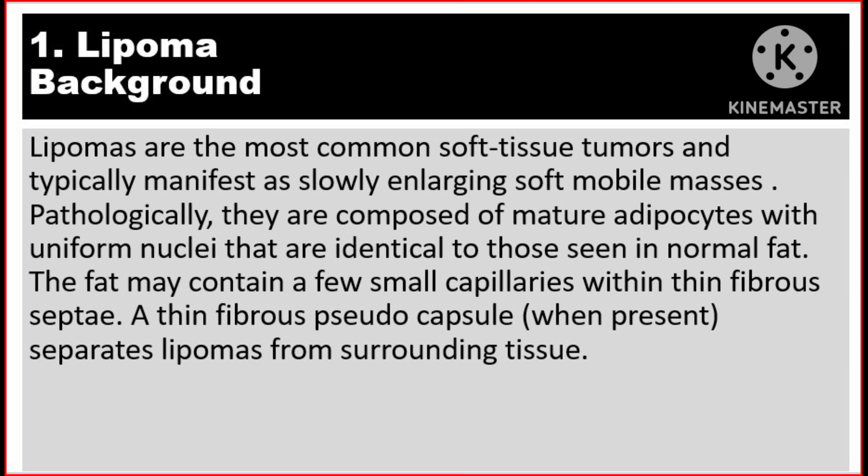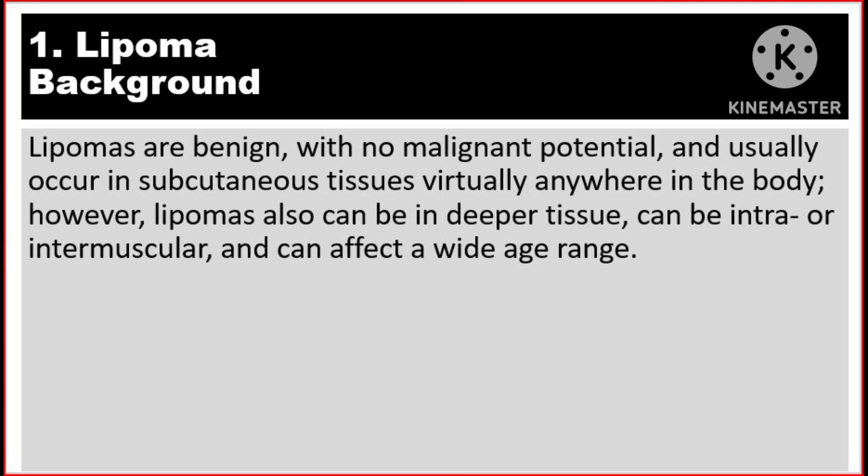Lipoma background. Lipomas are the most common soft tissue tumors and typically manifest as slowly enlarging soft mobile masses. Histologically, they are composed of mature adipocytes with uniform nuclei that are identical to those seen in normal fat. The fat may contain a few small capillaries within thin fibrous septa. A thin fibrous pseudocapsule, when present, separates lipomas from surrounding tissues. Lipomas are benign with no malignant potential and usually occur in subcutaneous tissues virtually anywhere in the body. However, lipomas can also be in deeper tissue, can be intra- or intermuscular, and can affect a wide age range.